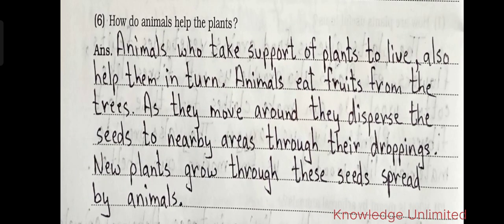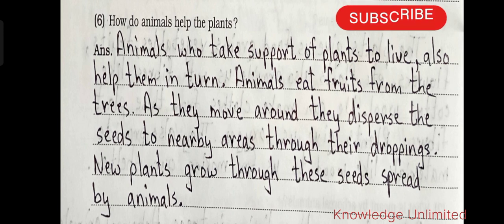Question six: how do animals help the plants? Animals that take support of plants also help them in turn. Animals eat fruits from the trees, and as they move around they disperse the seeds to nearby areas through their droppings. New plants grow from these seeds spread by animals.